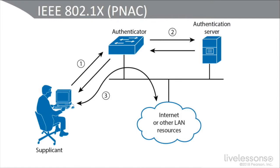Considering how much damage can be done by a malicious threat agent who has access to a switch port — an empty cubicle, an office, a break room, the foyer, conference rooms, or even the CEO or CIO's office — .1X guards against sending and receiving frames by unidentified or unauthorized parties. It does require a supporting switch that supports dot one X.